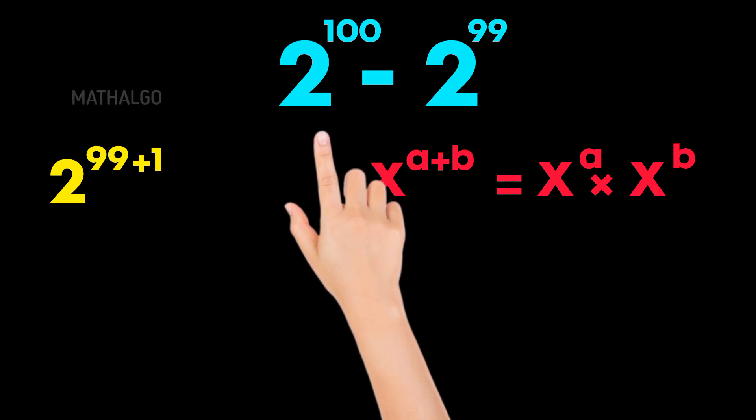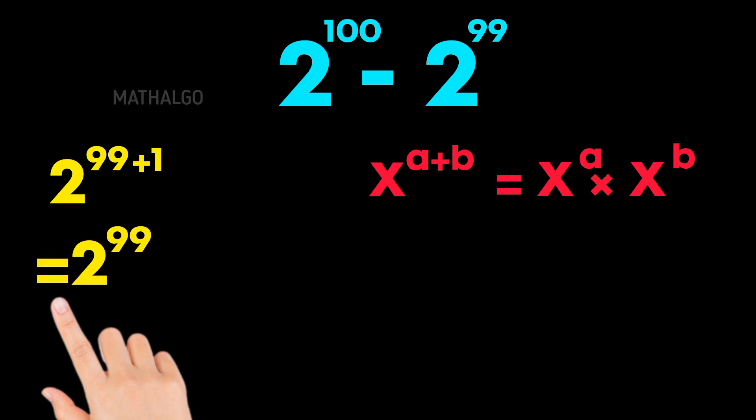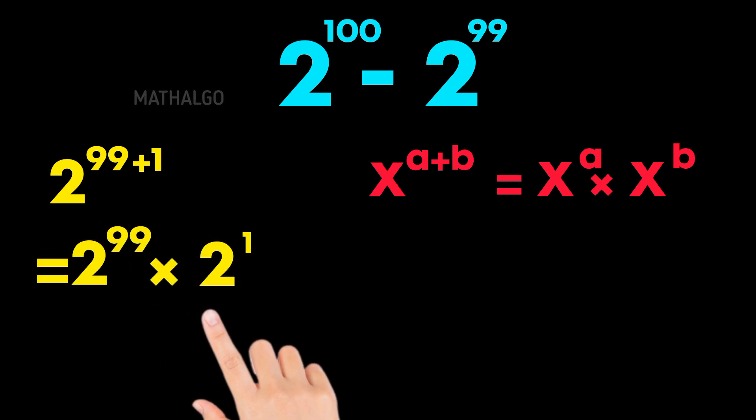So in this case, 2 to the power of 100 is the same as 2 to the power of 99 times 2 to the power of 1.